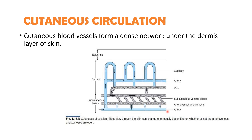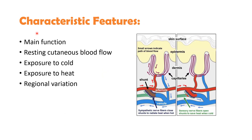The arteriovenous anastomoses are located in the distal part of extremities like hands and feet, nose, lips and ear lobules. These are wide, low-resistant connections that serve as shunts and allow blood to bypass the superficial capillary loops, playing a major role in the control of body temperature. The main characteristic feature of cutaneous blood flow is to aid in the regulation of body temperature.